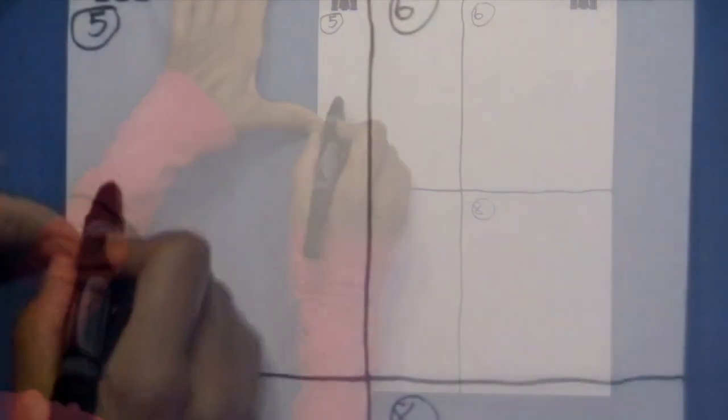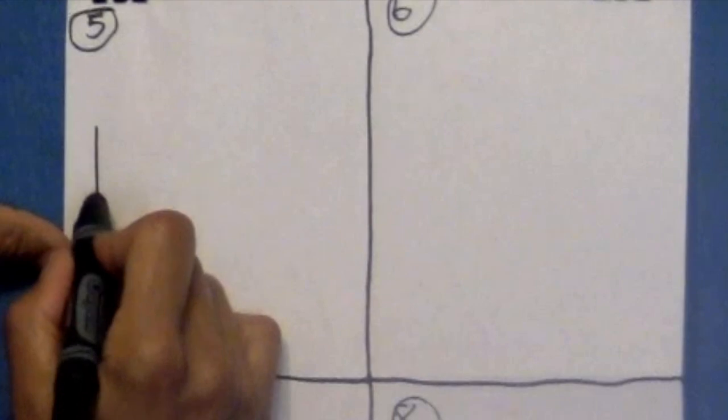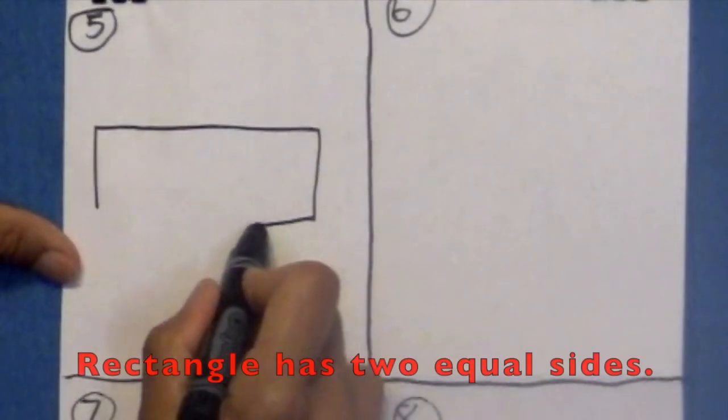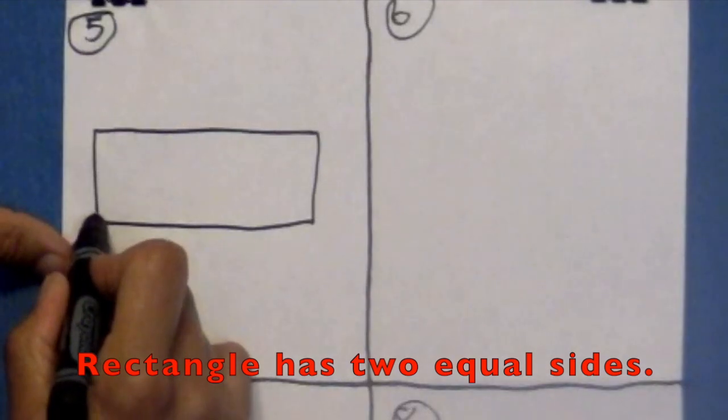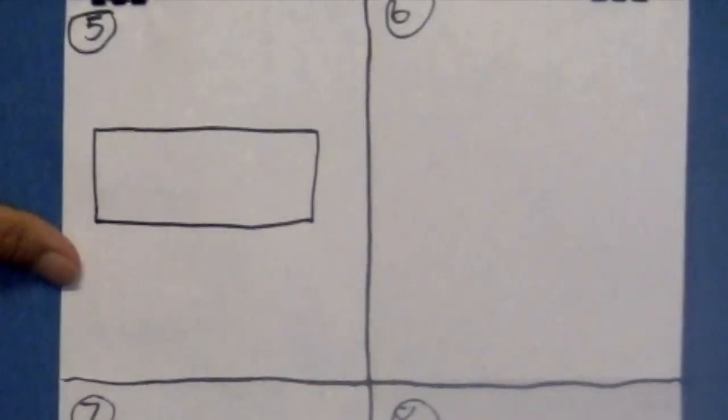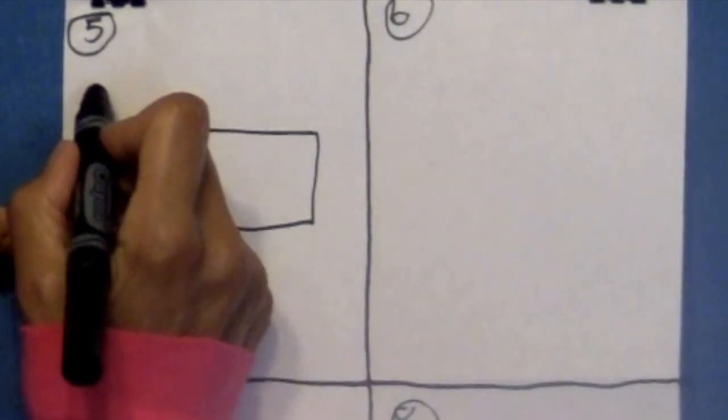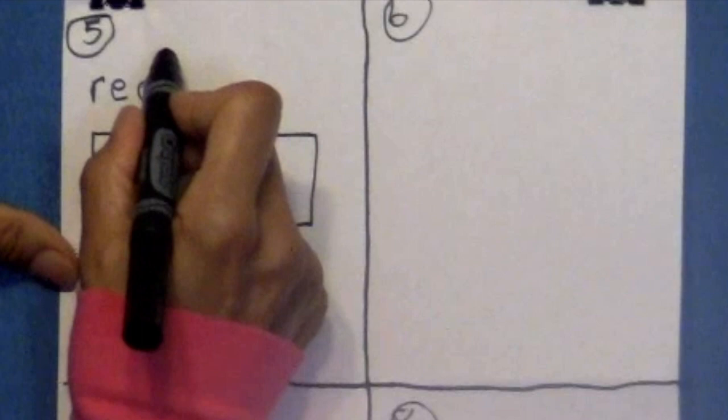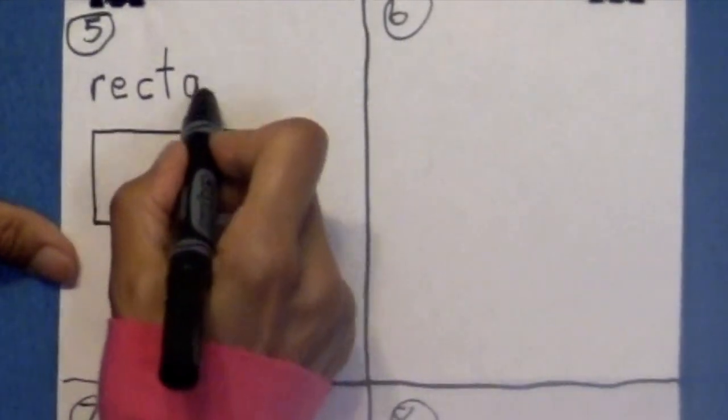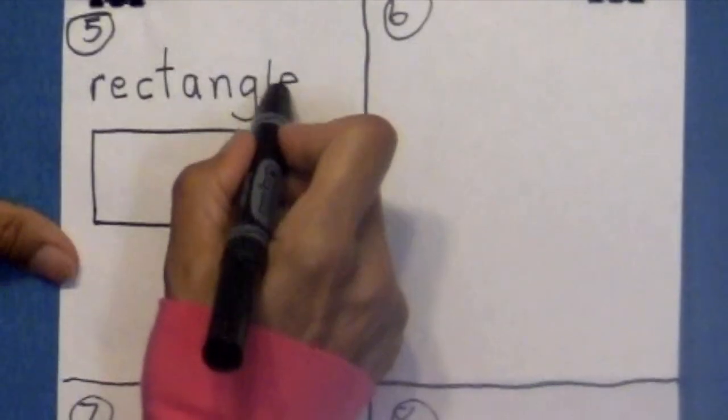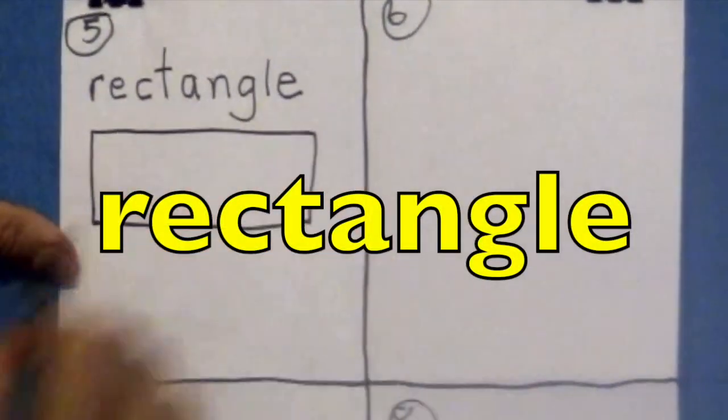In box five, I want you to draw a rectangle. And a rectangle has two equal sides. Boys and girls, help me spell rectangle. I want to hear you. R-E-C-T-A-N-G-L-E. Rectangle.